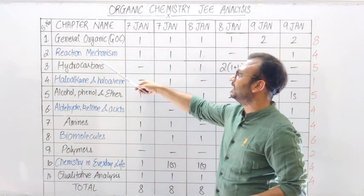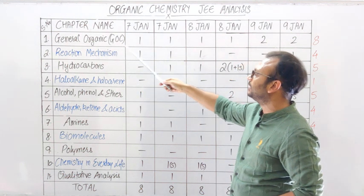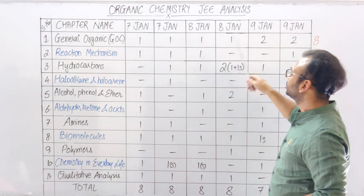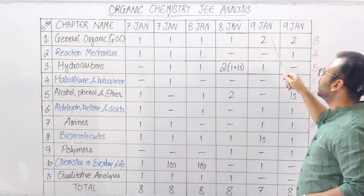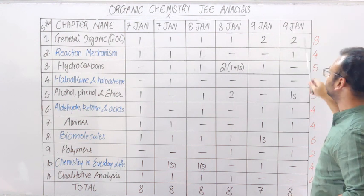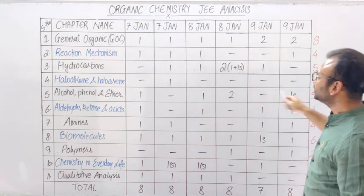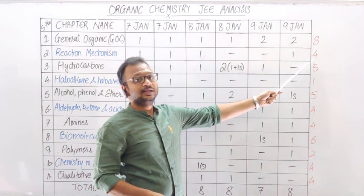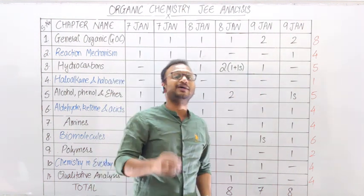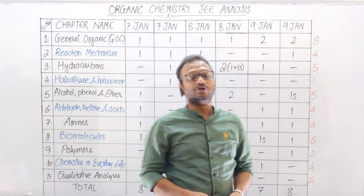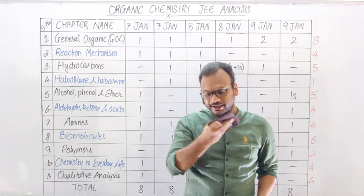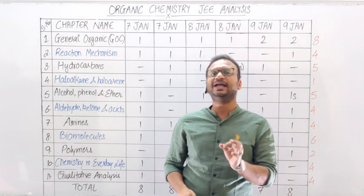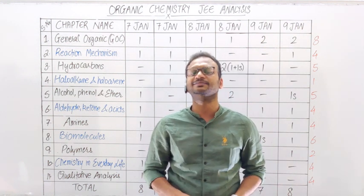उसके बाद next chapter आता है Reaction Mechanism। Reaction Mechanism में 7th January Morning Shift में 1 question, Evening Shift में 1 question, 8th January Morning Shift में 1 question था, Evening Shift और 9th January Morning Shift में कोई question नहीं था, 9th January Evening Shift में 1 question था। Total 6 papers में से Reaction Mechanism के 4 questions पूछे गए, यानि GOC का exact 50%। हर एक paper के अंदर mostly 1 question Reaction Mechanism से आता है।